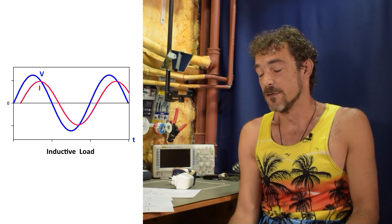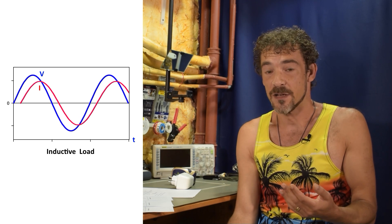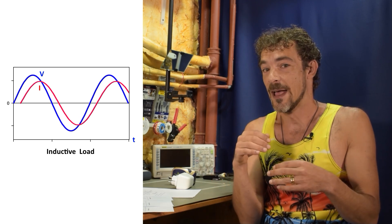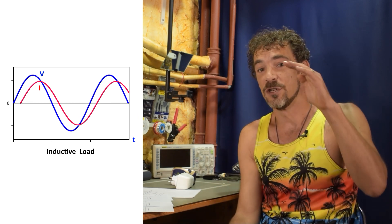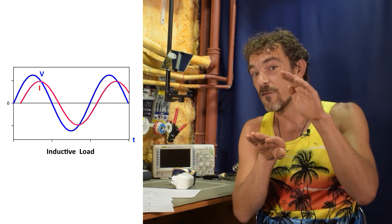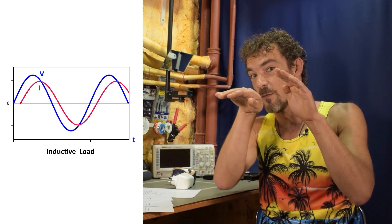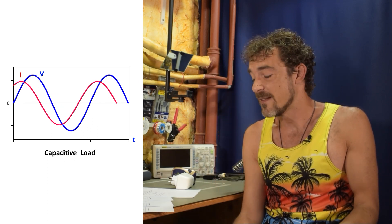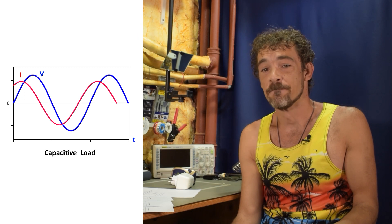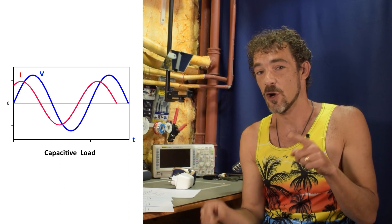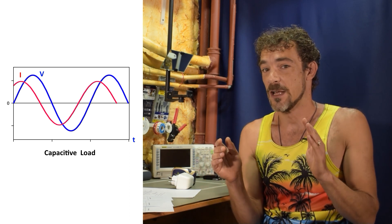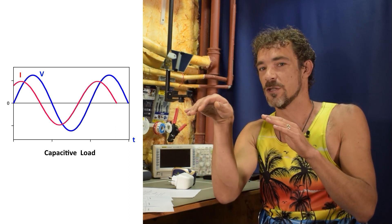When we have an inductive load, then you'll notice that something happens here. You get a phase shift. The current waveform actually lags behind the voltage waveform. So first the voltage has to go up, and then just slightly after it goes up, the current waveform starts to go up. That's an inductive load. Then for a capacitive load, again, we have something slightly different. What happens is the current actually leads the voltage. So you can see that the current waveform there is actually going up slightly before the voltage starts going up.